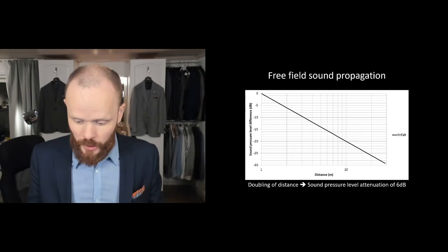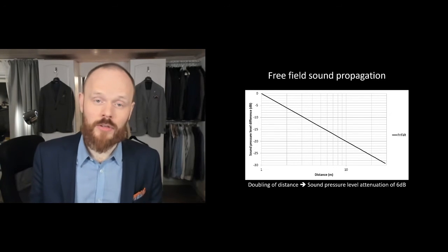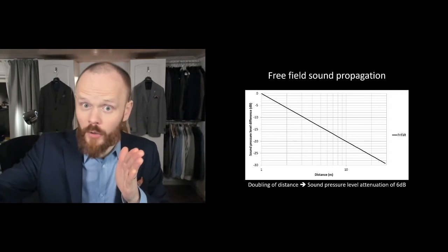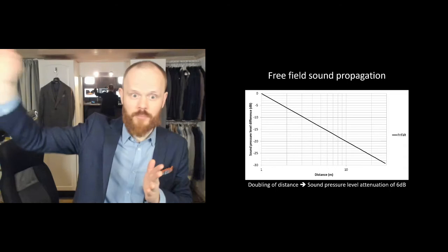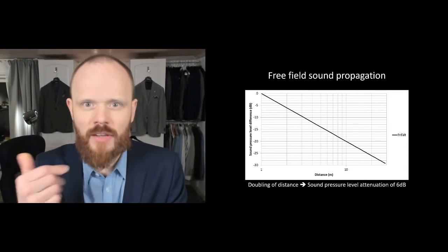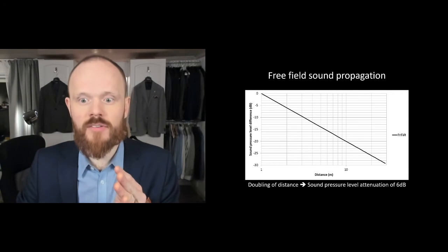So sometimes we measure the sound pressure level close to the source, and then we can extrapolate to find out what it's going to be over there by those houses far, far away. 6 decibels every time you double the distance.